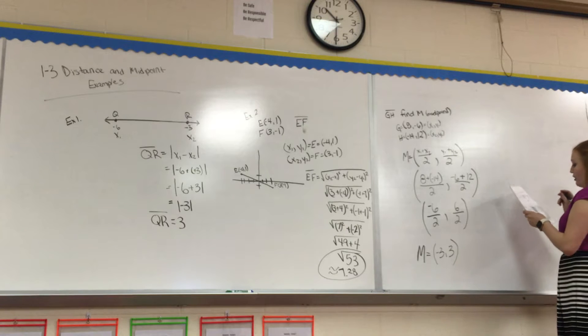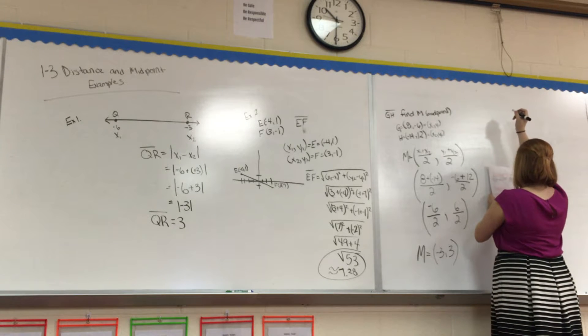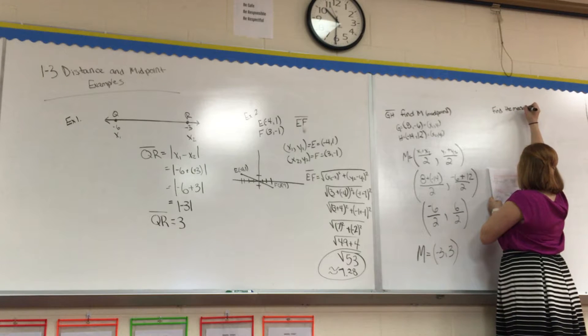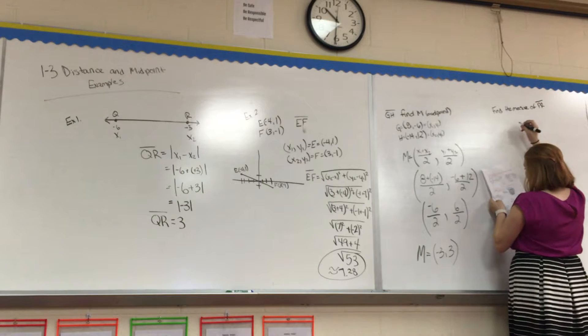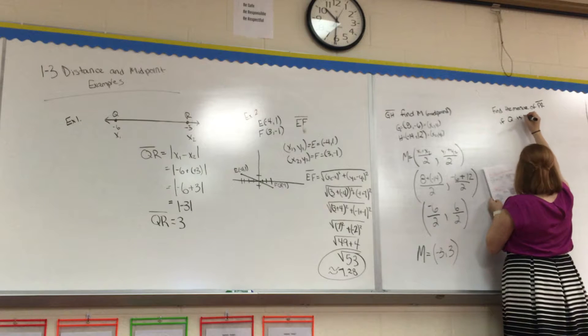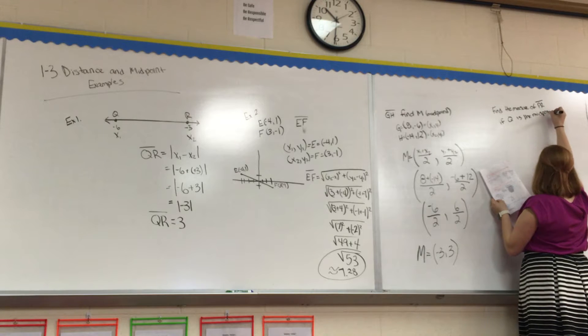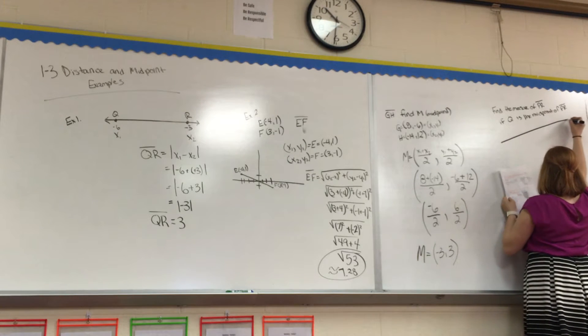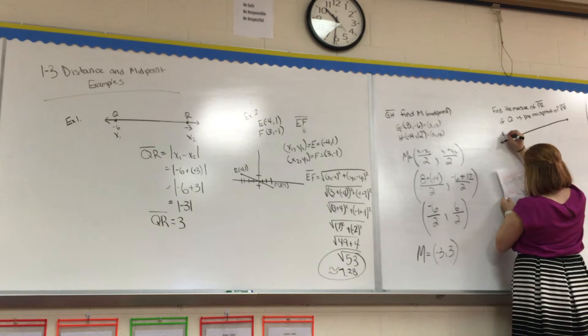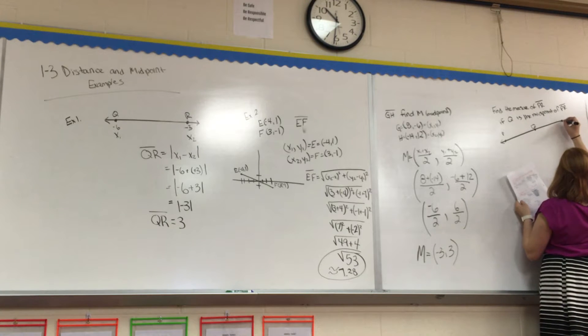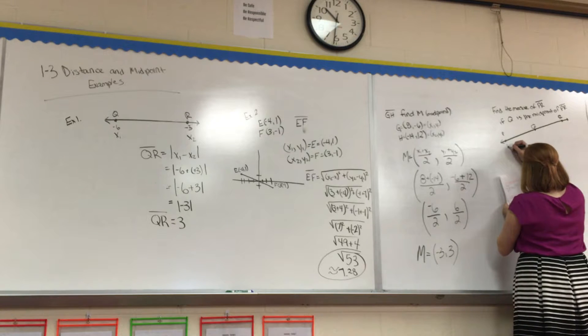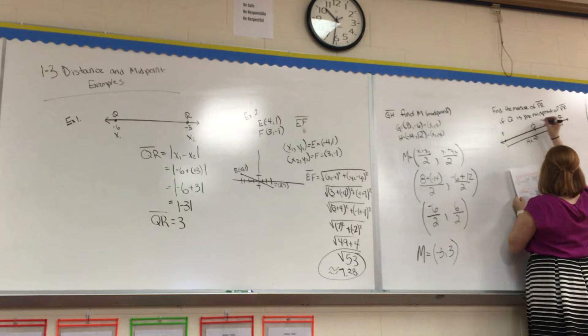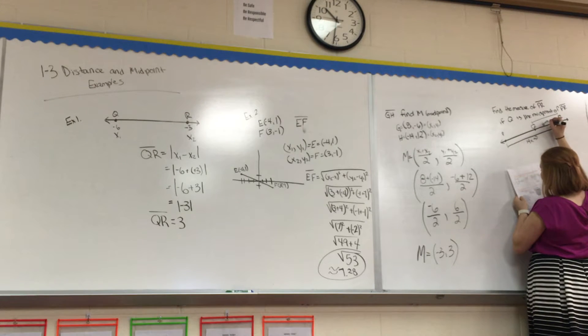Okay, we are going to do another one. We are going to find the measure of PR if Q is the midpoint of PR. So we have our line here. And we have a point here that's P. We have a point here that's Q. And we have a point here that's R. This whole thing is 14x plus 2. And then this little section, QR, this section right there, is 6 minus 3x.